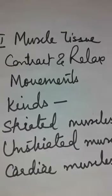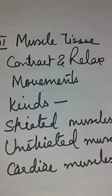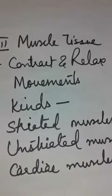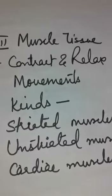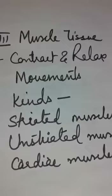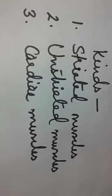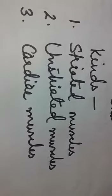This is the basic feature of muscular tissue — contraction and relaxation. This property enables body movements. Muscle tissue is further divided into three categories: striated muscle, unstriated muscle, and cardiac muscle. Striated muscles are also known as skeletal muscle.